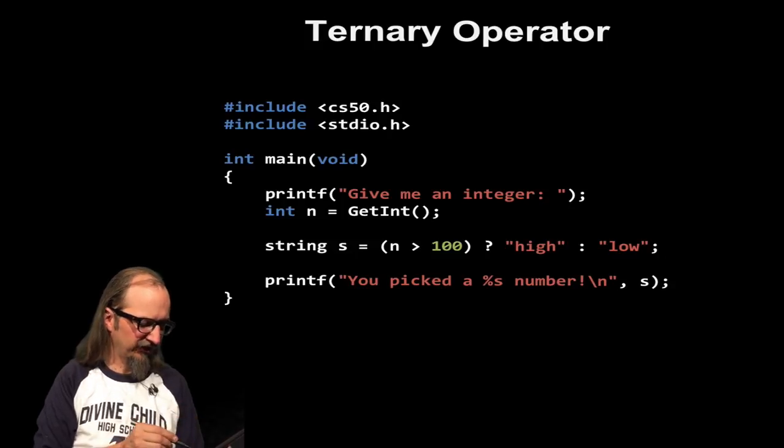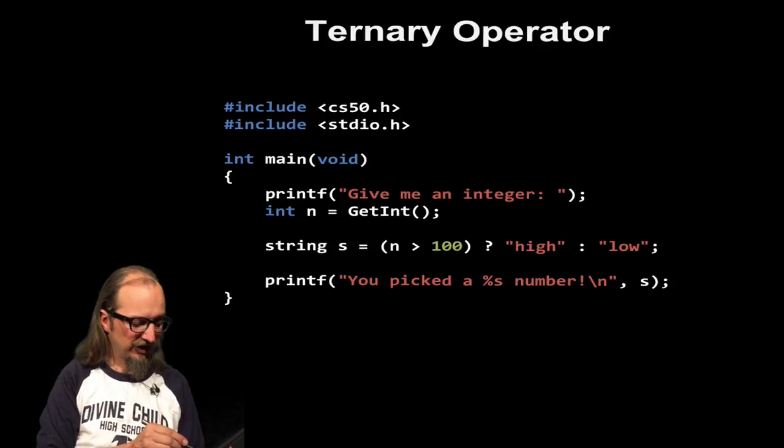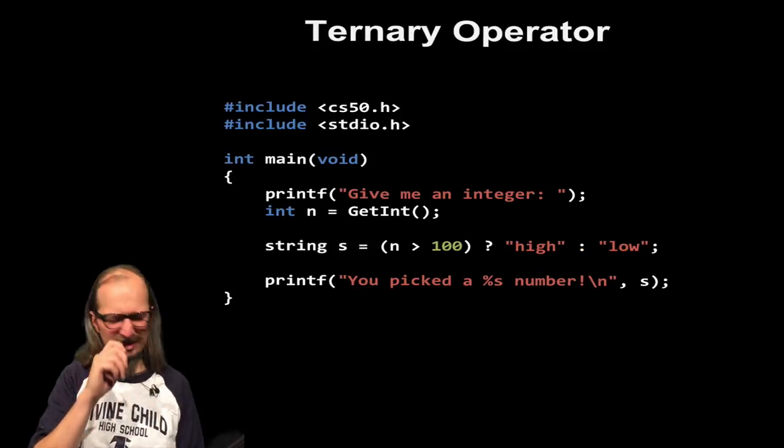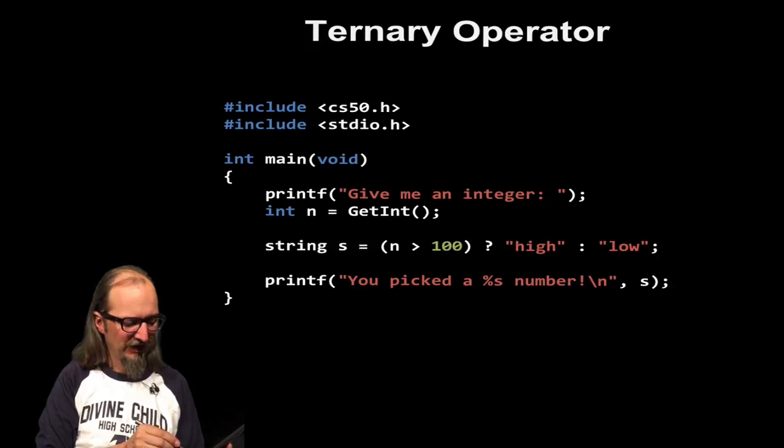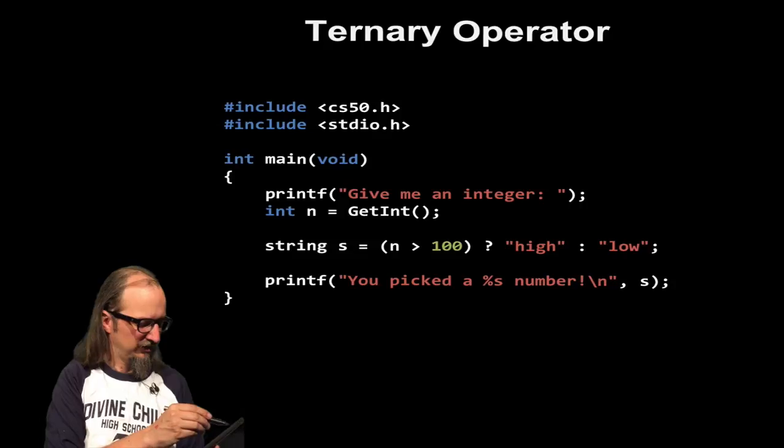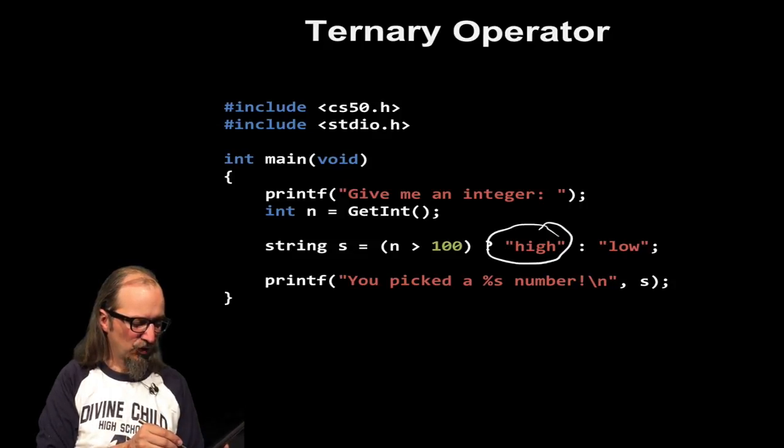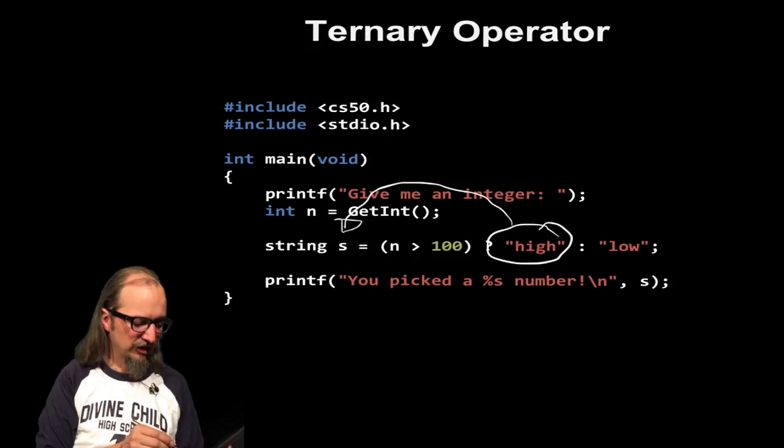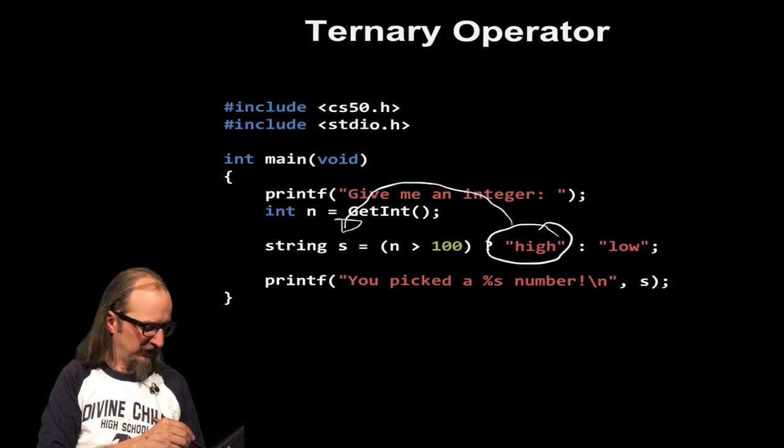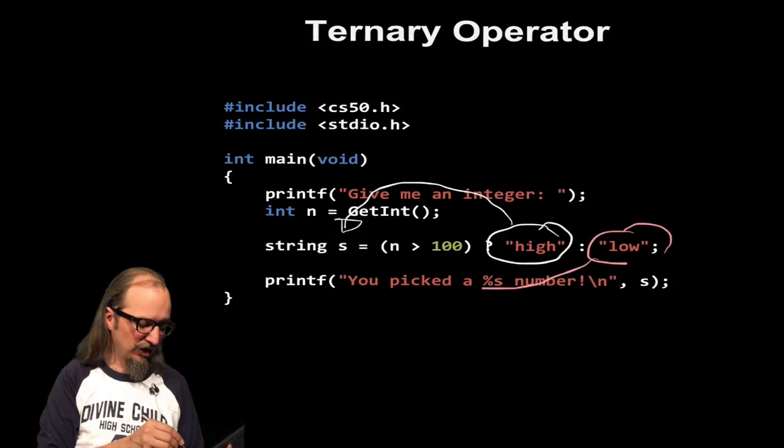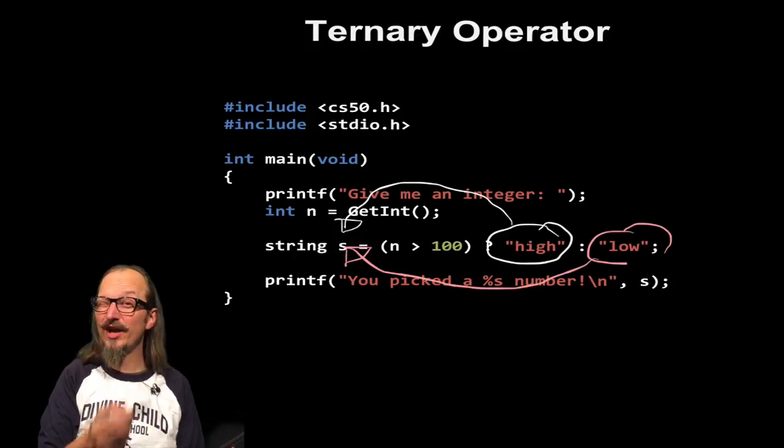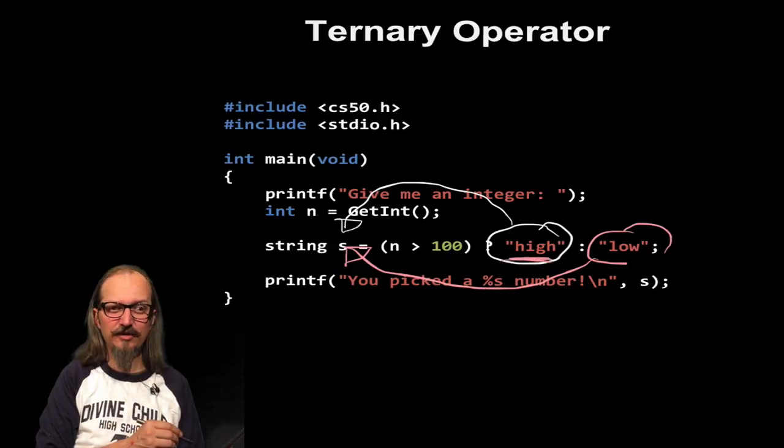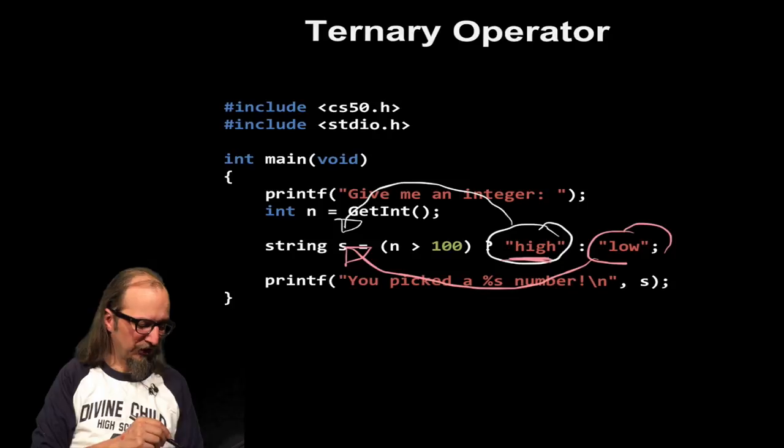So in this case, what we're saying is we're asking a question, because this is a question. We're saying if N is greater than zero, question mark, high, colon, low. Wait, what? So what this is saying is if this statement is true, take the first thing. So if N is greater than zero, take high and store high in S. And then it's saying, if it's low, if this is not true, if not true, take low and then store low in S. So if N is greater than 100, it's going to look at this first thing before the colon, and that's going to be stored in S. And if it's low, I mean, if it's not true, it'll take what's after the colon and store it in S. So that's how a ternary operator works.